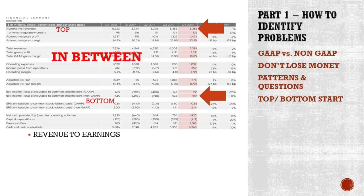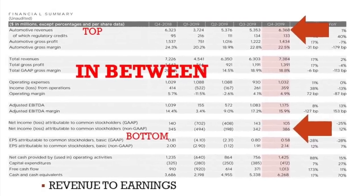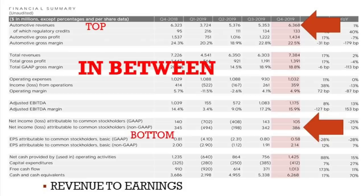Everything starts with revenues and then there are many items in between before you reach the bottom line. Using public investor relations data from the car company: revenues in the fourth quarter were $6.3 billion, however net income was $100 million GAAP and $400 million non-GAAP — a huge difference. There's a lot in between: adjusted EBITDA, what counts as expenses, capitalized earnings. Small changes there have a big impact on the bottom line.